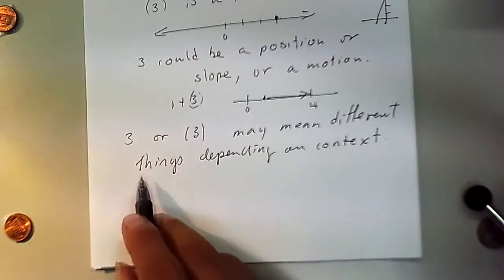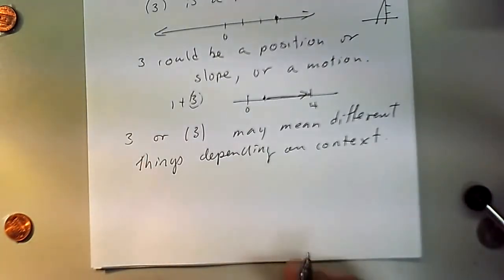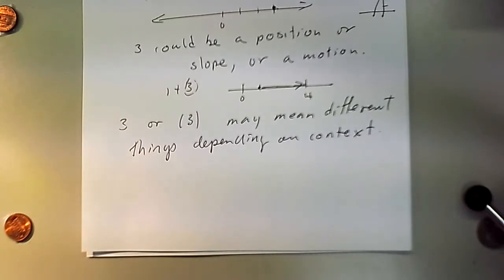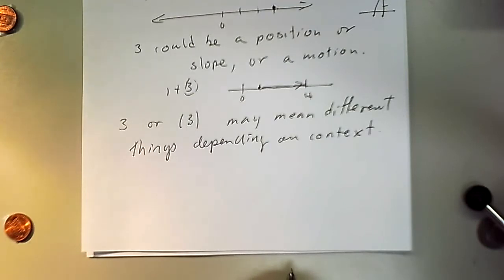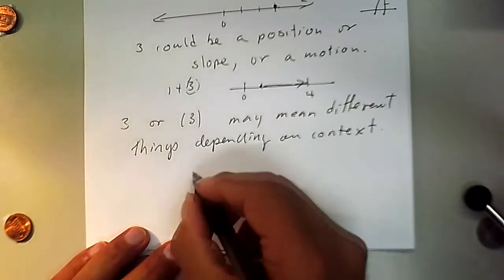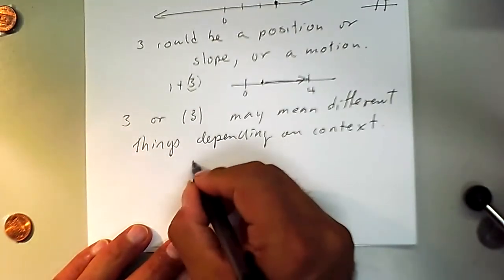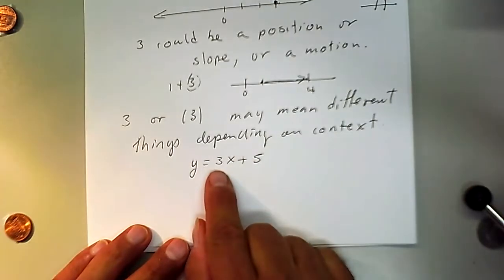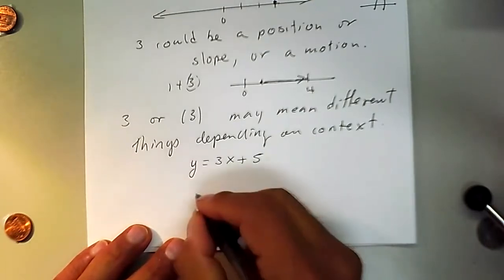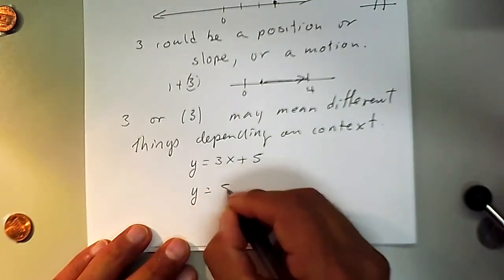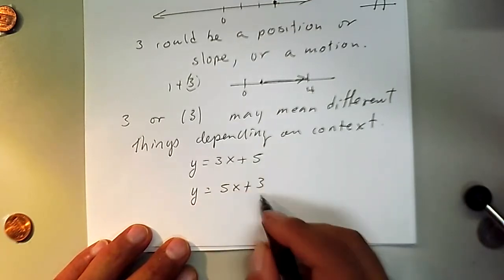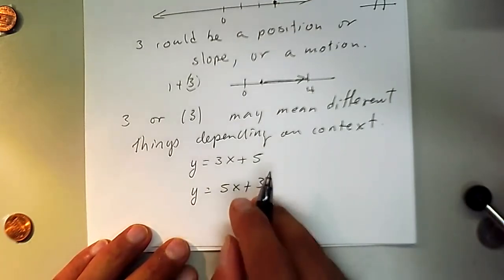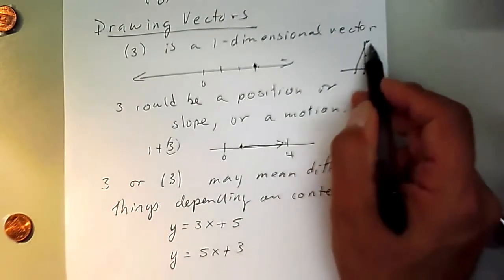For instance, if someone asks whether three is a slope or a y-intercept out of the blue, you'd say, 'I don't know — you need a frame of reference.' If you have 3x + 5, then 3 is the slope. But if you have 5x + 3, then 3 is not the slope — it's the y-intercept, a position where the line starts.